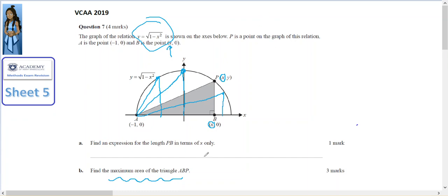So to assist you in doing this, the first question is find an expression for PB in terms of x only. So this is PB. So I'm interested in the y-coordinate of P, because the y-coordinate of B is 0. So this height will be that y-coordinate of P. And since P is a point on the graph, then that y-coordinate is the square root of 1 minus x squared.